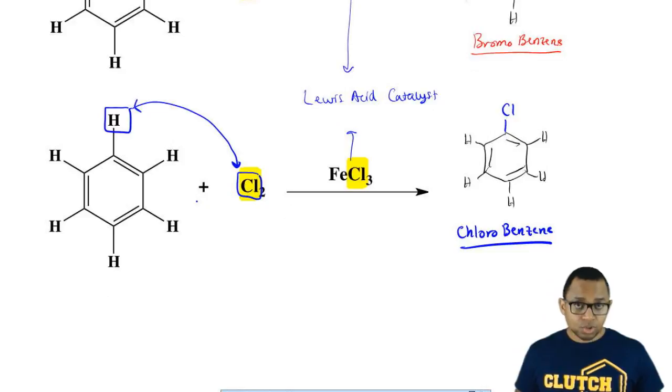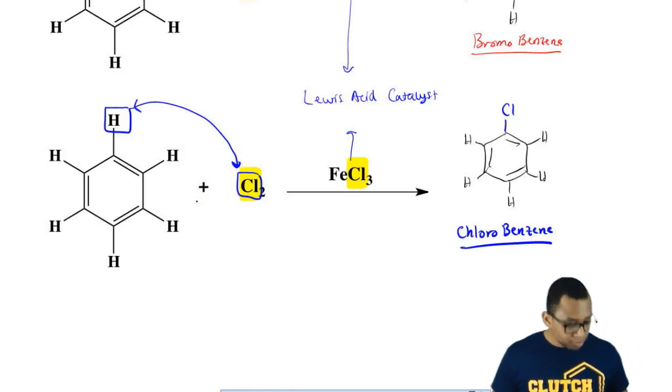So chlorobenzene would be my answer. That's all it is. We're substituting in a halogen, in this case, Br or Cl. Look at how the Lewis acid catalysts match. Use Br2, so you have to use FeBr3. Use Cl2, so you have to use FeCl3.